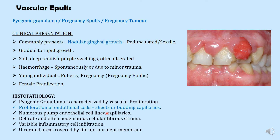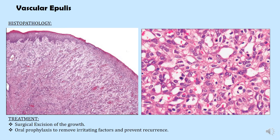Histopathologically, pyogenic granuloma shows proliferation of endothelial cells with sheets of budding numerous plump endothelial cells, and a fibrous stroma with varying degrees of inflammation. In this histopathology slide you can see the overlying epithelium; the ulcerated area is where epithelium is absent with dense inflammatory cells; the white spaces correlate to vascular spaces on high power view; and the blue dots are inflammatory cells. Treatment is surgical excision of the growth and oral prophylaxis to remove the irritating factor and prevent recurrence.